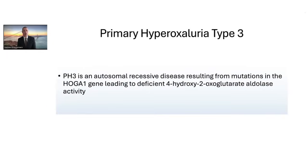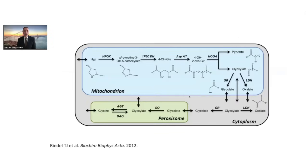Primary hyperoxaluria type 3 is also an autosomal recessive disease, resulting from mutations in the HOGA1 gene, which leads to deficient 4-hydroxy-2-oxoglutarate aldolase activity. In the mitochondria of the hepatocyte, this enzyme converts 4-hydroxy-2-oxoglutarate into pyruvate and glyoxalate. Deficient activity results in accumulation of 4-hydroxy-2-oxoglutarate in the mitochondria, which eventually ends up in the cytoplasm, where it is converted via different enzymes into glyoxalate and ultimately oxalate via lactate dehydrogenase.